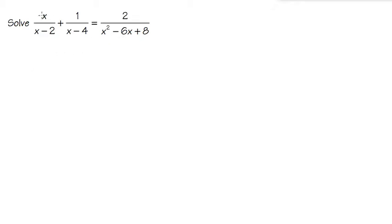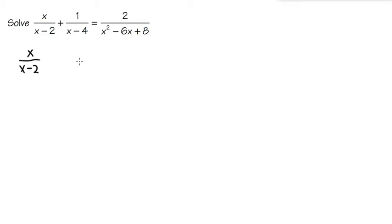For the first fraction, we have x over x minus 2. For the x minus 2, we cannot factor anything, so we'll just keep it as it is. Let me write it down right here: x over x minus 2. And then we are going to leave some space — we'll see why we are leaving this space in a minute.